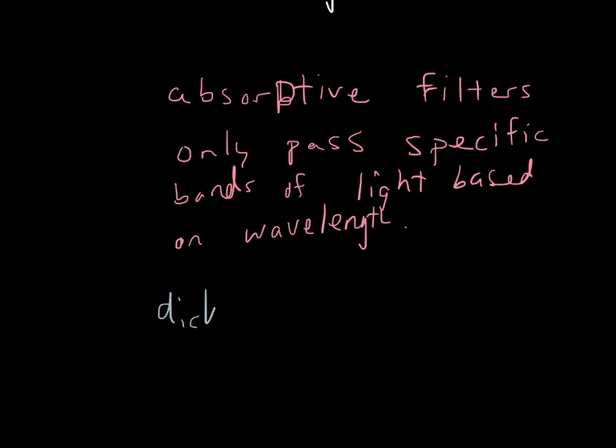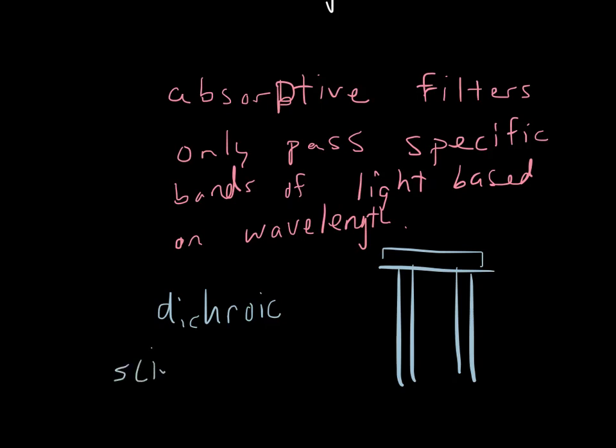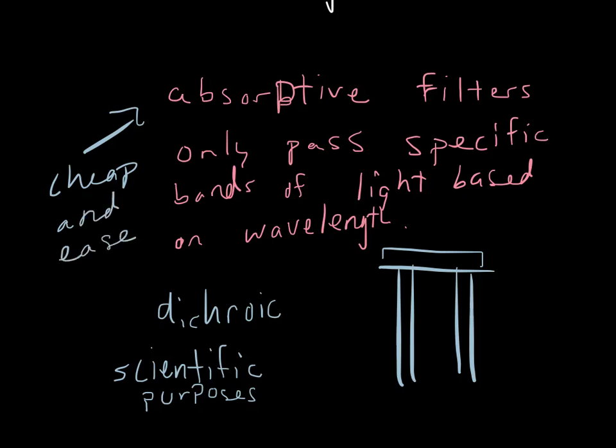Then we have the other filters I was talking about, which is a dichroic filter. What this does, again, you have a sandwiching going on between two pieces of glass. Dichroic filters are used mostly for scientific purposes because they are really more precise. Absorptive filters are like really cheap and easy to make pretty well, so this is going to be your everyday filter. But a dichroic filter is a little bit different.